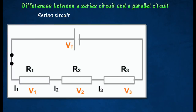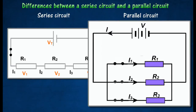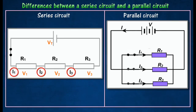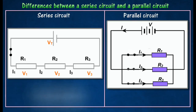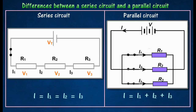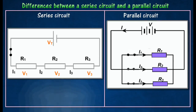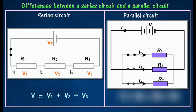The differences between a series circuit and a parallel circuit. A series circuit has only one path for the current to flow, while a parallel circuit has more than one path for the current to flow. Current is the same throughout a series circuit, while the current in a parallel circuit is different at different points. In a series circuit, the component with the largest resistance has the highest potential difference across it, while in a parallel circuit the potential difference across all the components is the same.